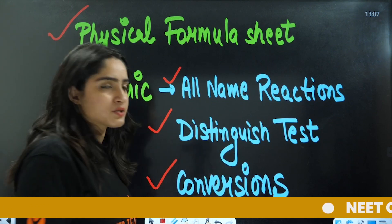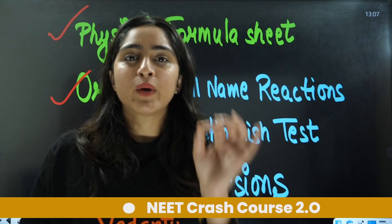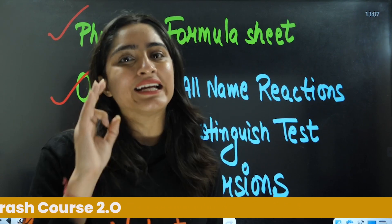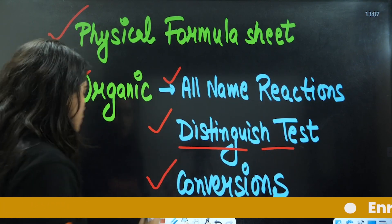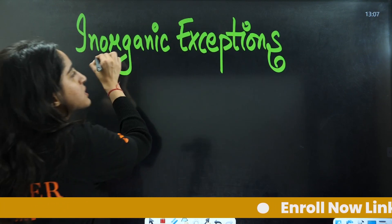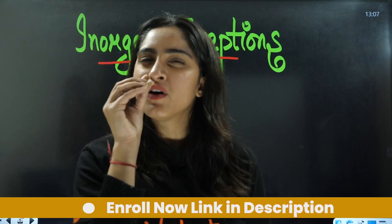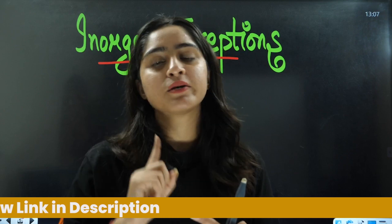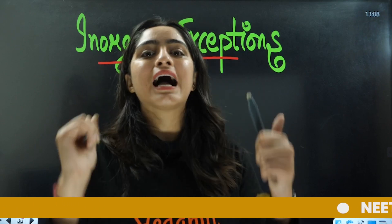We have distinguished tests and conversions — we already completed conversions this Tuesday with very important NEET and CBSE conversions. Next are distinguished tests, which you must know. Then there are inorganic exceptions. So if you have done all these — physical chemistry formulas, inorganic exceptions, organic chemistry name reactions, distinguished tests, and conversions — you are sorted.